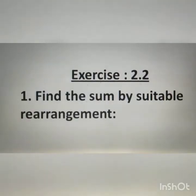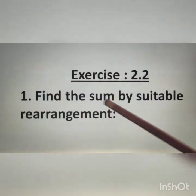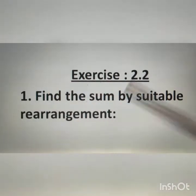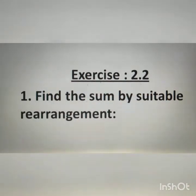In the first two questions of exercise 2.2, the commutative property of whole numbers will be used. Exercise 2.2, first question: find the sum by suitable rearrangement.